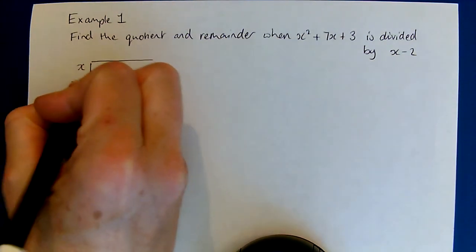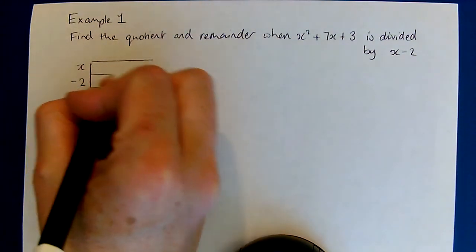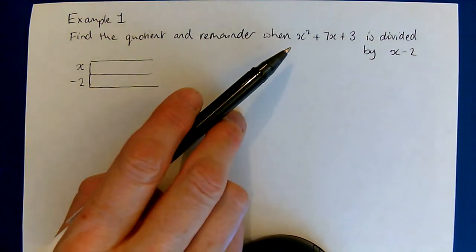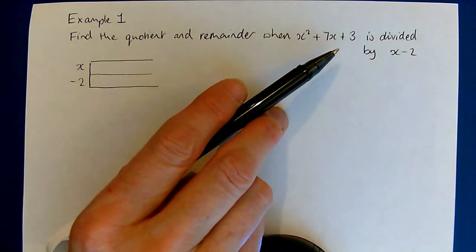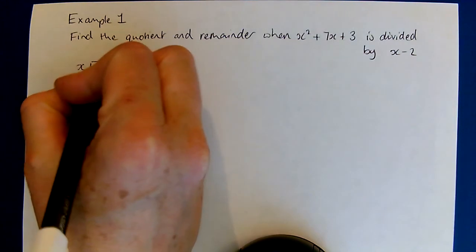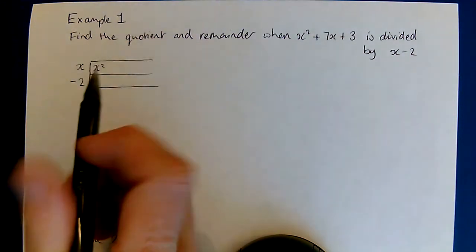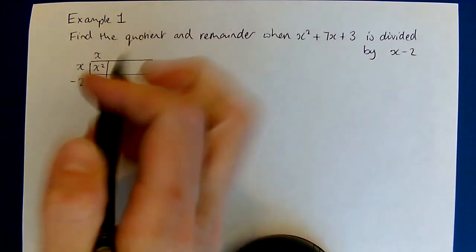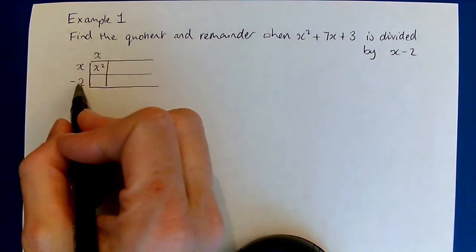To divide by x minus 2, I know that I'm aiming for all the pieces in the box to add up to x squared plus 7x plus 3. The first term is x squared, so in order to make x squared I know I'm going to do x times x.